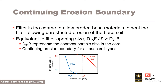For the continuing erosion condition, the filter is too coarse to allow eroded base materials to seal the filter, allowing unrestricted erosion of the base soil. Thus, this condition and the no erosion condition are the bounds for filter performance. The effective pore diameter of the filter — the minimum diameter of pores that will allow soil particles to pass — is about D15 of the filter divided by 9. The D95 of the base soil is compared against this opening size of the continuing erosion boundary.